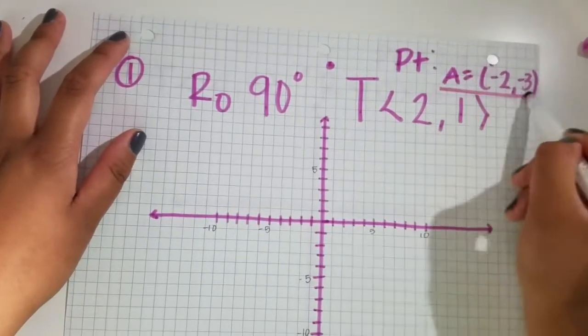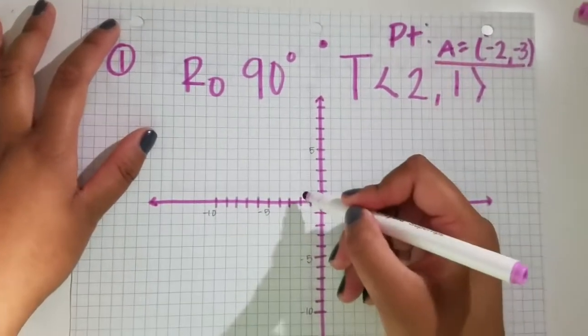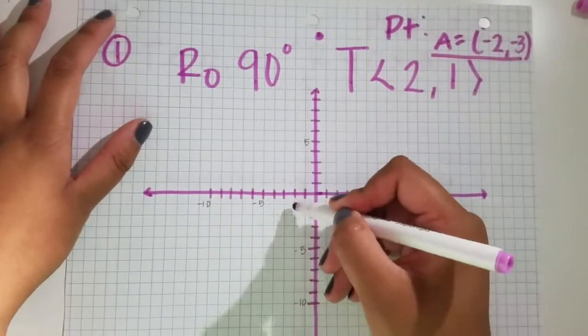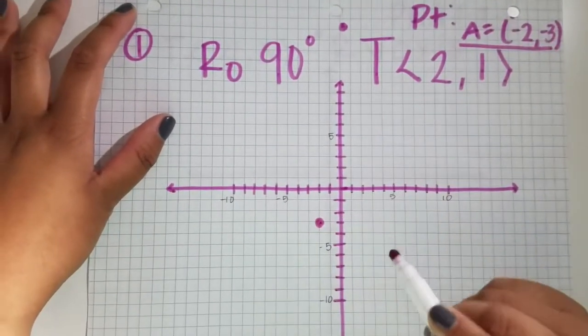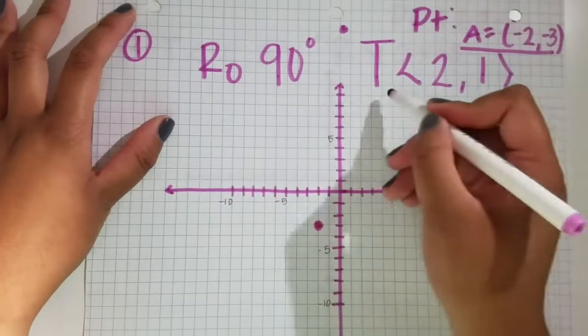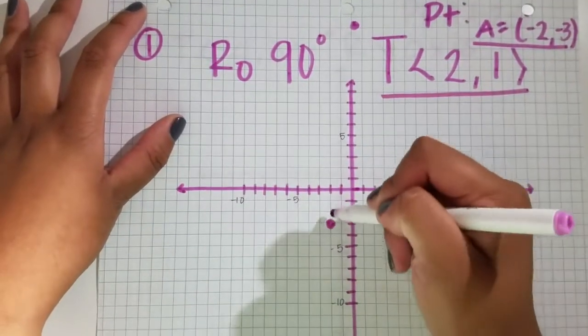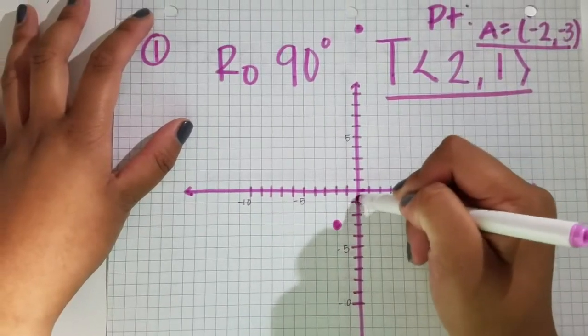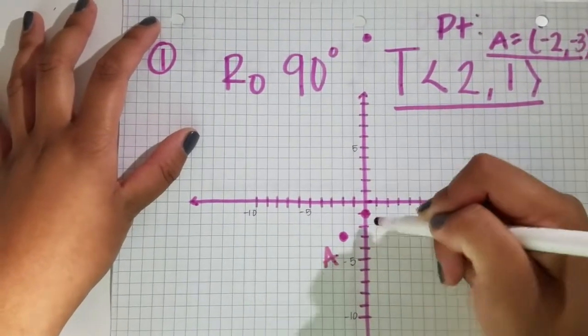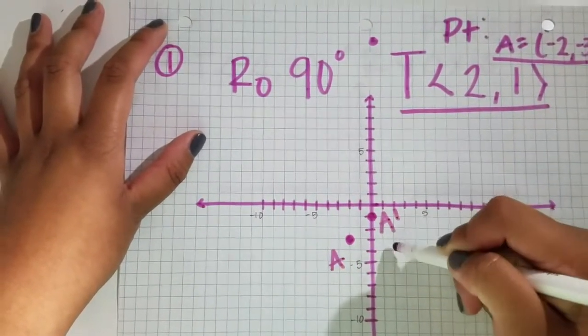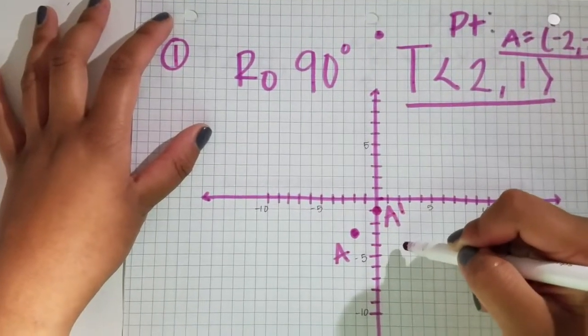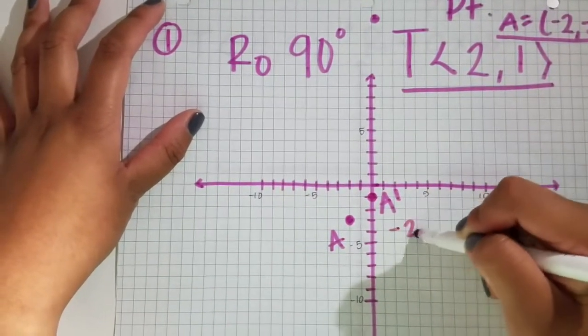So this is A, your pre-image point. Plot (-2,3). Then, reading from right to left, you're going to do this first. Go up 1, 2, over 1. This is point A, this is A prime, and that point is (-2,0).